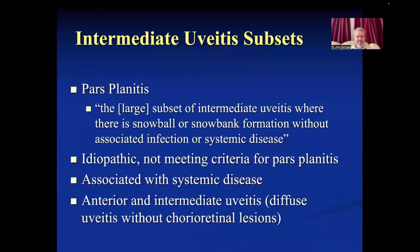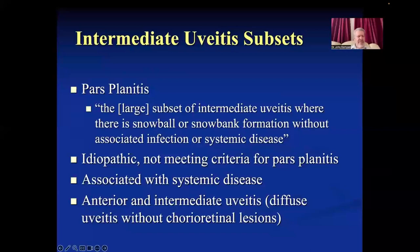According to SUN definitions, the parsplanitis subset — a very large subset of intermediate uveitis — includes those with snowball or snowbank formation, or both, without associated infection or systemic disease. You can also have intermediate uveitis not primarily characterized by snowballs, with more debris and haziness. There can also be intermediate uveitis associated with systemic disease, or combined with anterior uveitis, which is more like pan-uveitis but without chorioretinal lesions.